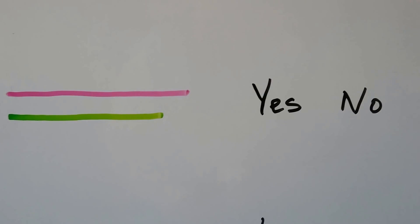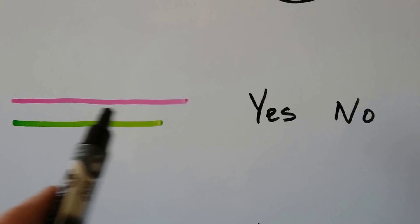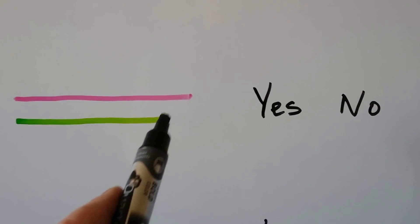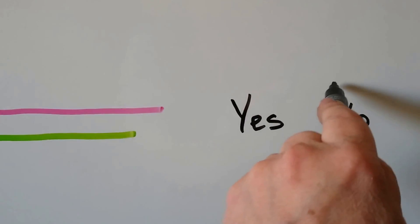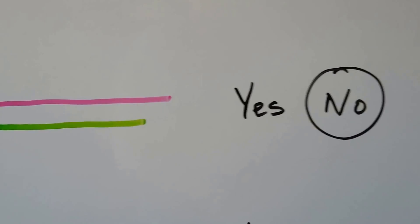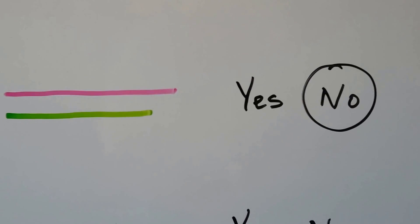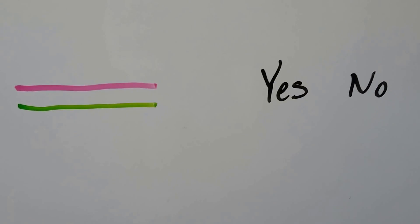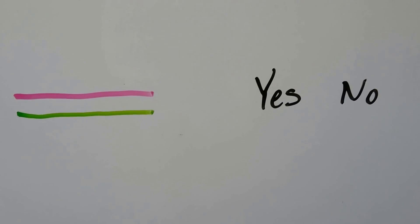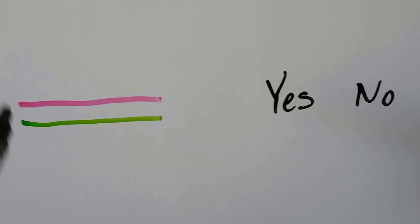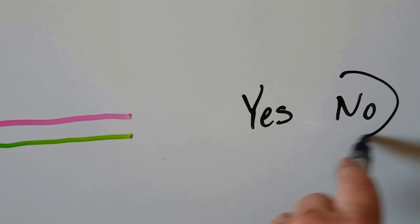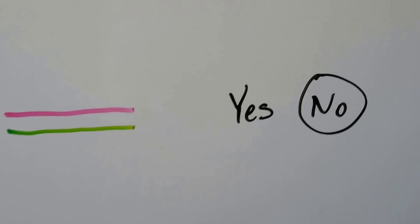Now is the first line shorter than the second line? The first line is sticking out further and the second line is back here, so no, the first line is not shorter than the second line. How about here — is the first line shorter than the second line? They're the same length, so it's not shorter. That's a no. It's not shorter if it's the same length.